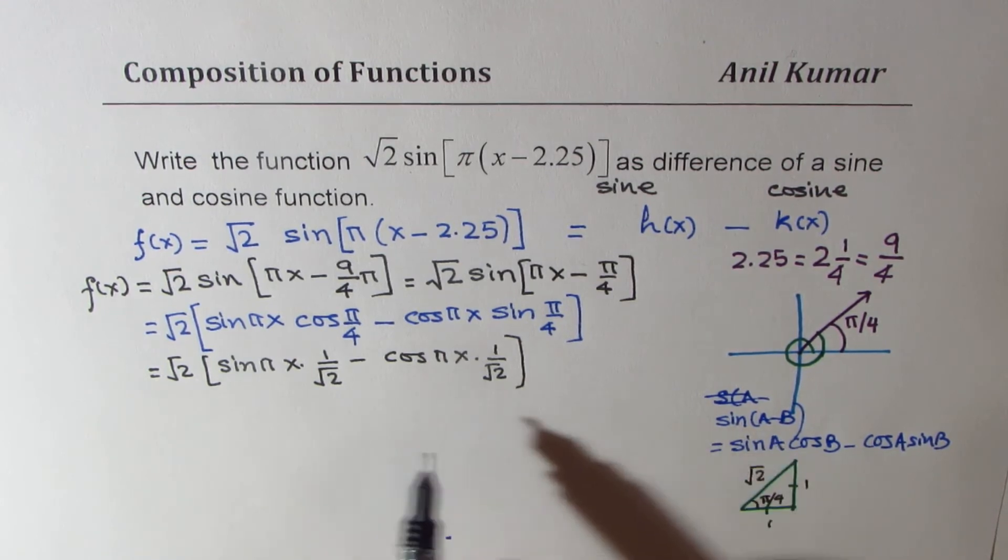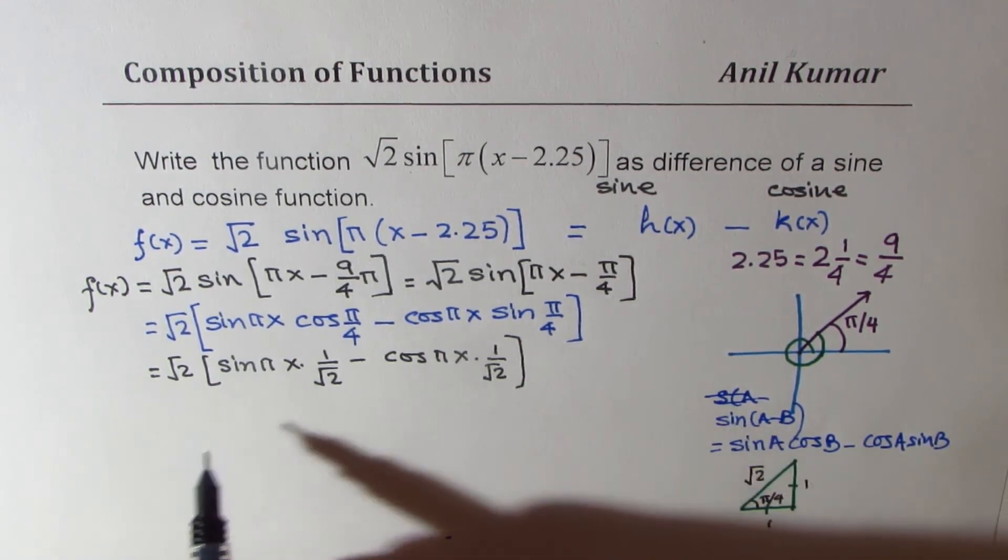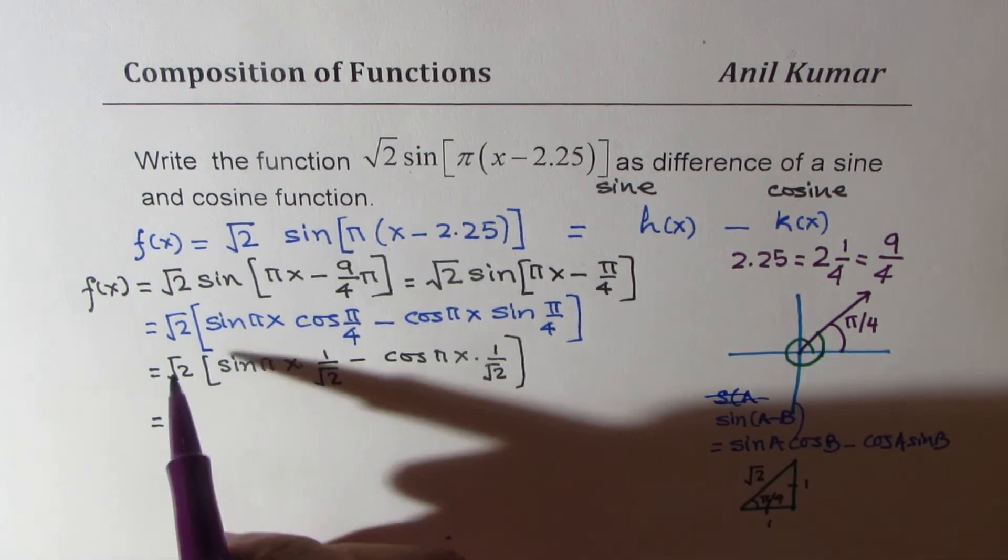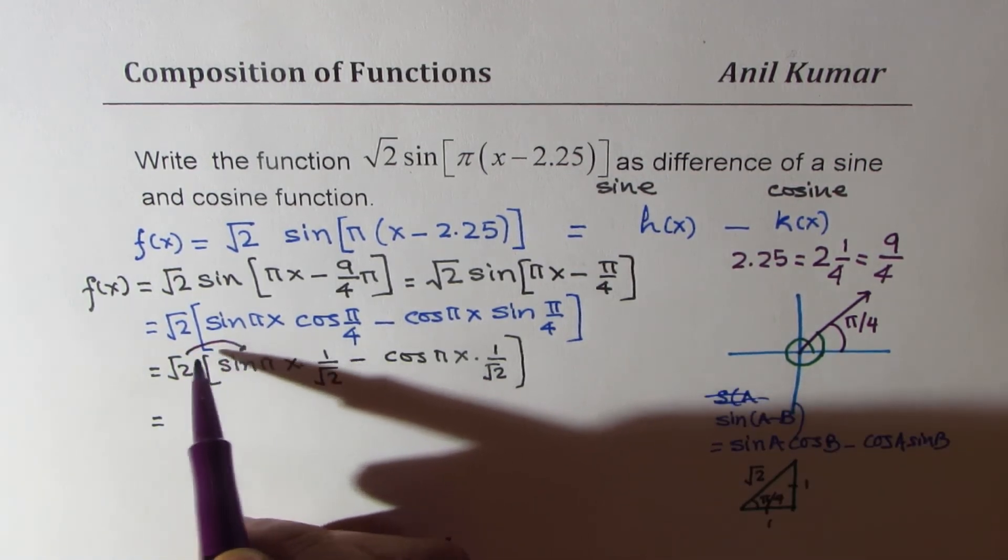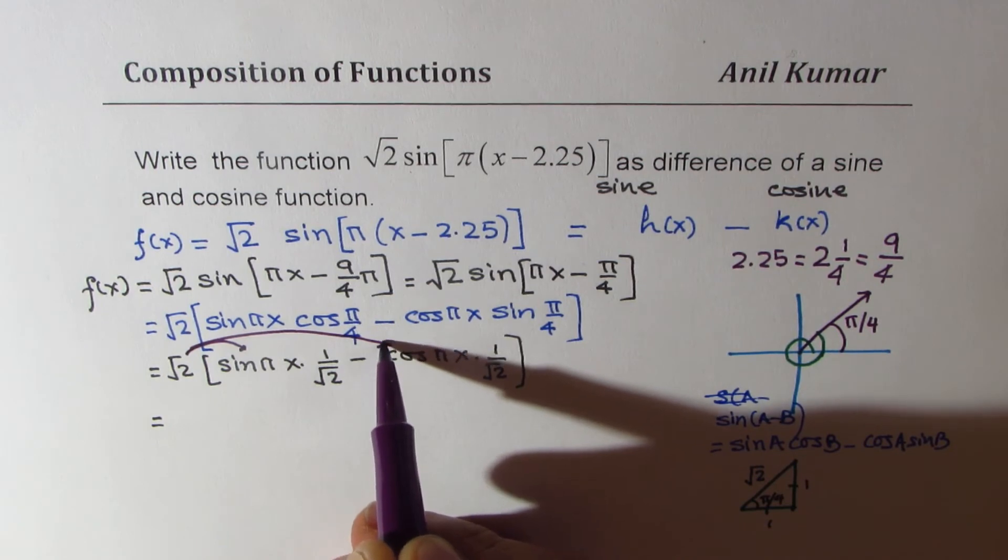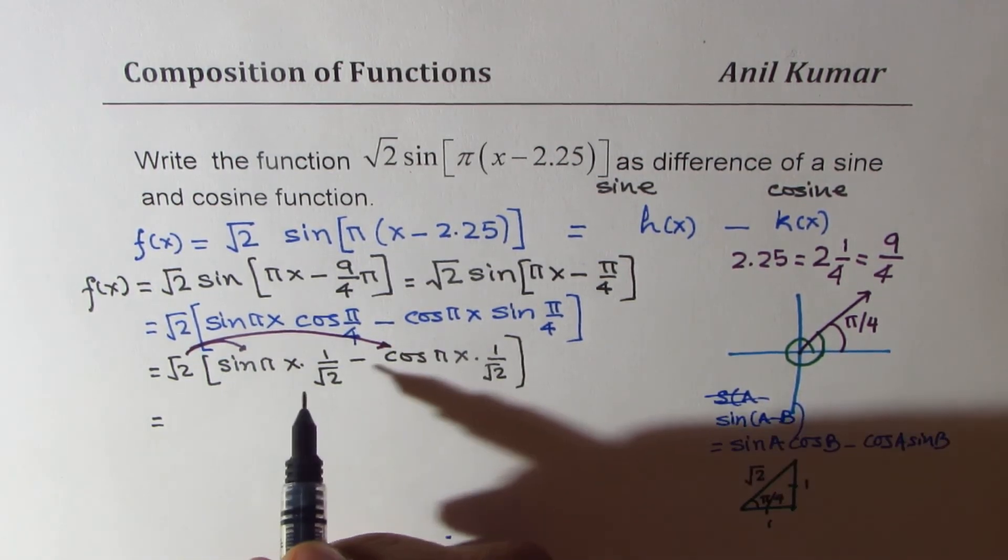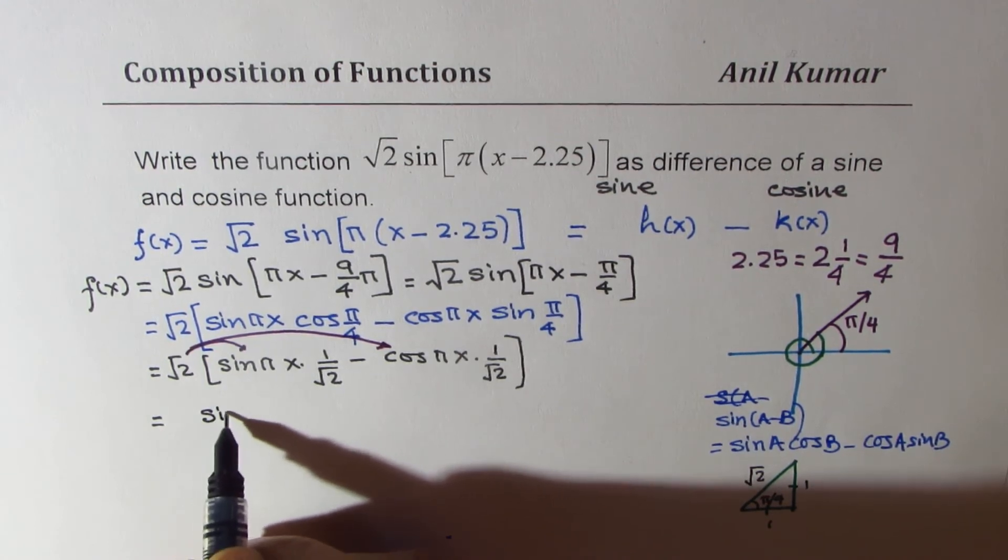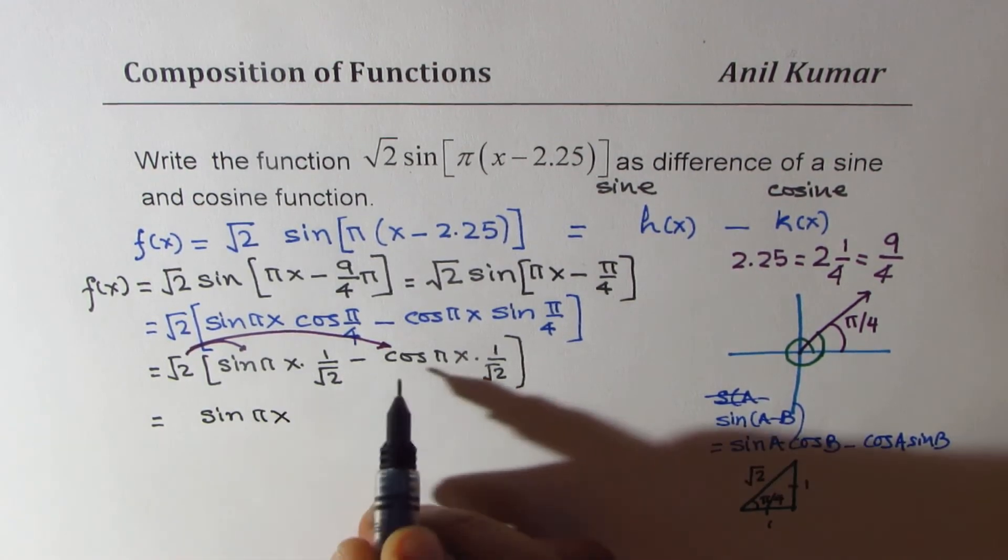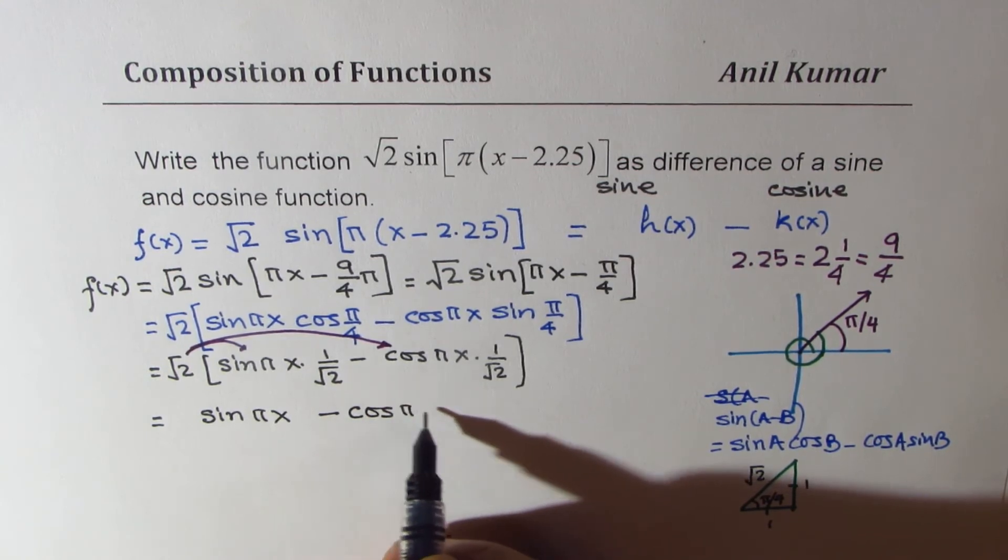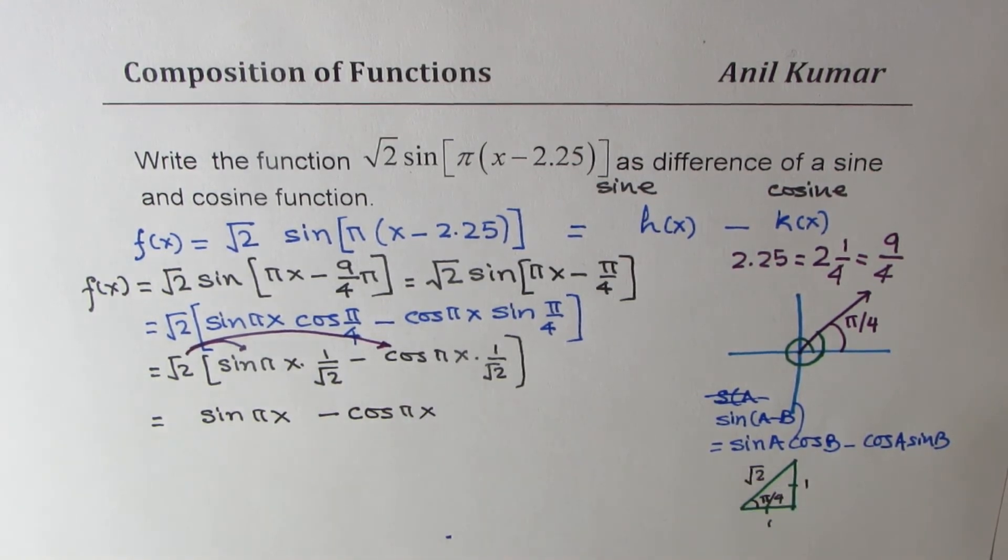Now 1 over square root 2 can get cancelled when you open the bracket. So apply the distributive property. When you apply the distributive property, you have to multiply this with both. So what happens? Here you get sine of pi x and there you get minus cos of pi x. Do you see that part?